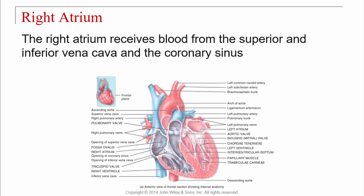We have a tricuspid valve on the right side with three cusps, and on the left side a bicuspid valve, also called the mitral valve, which also has chordae tendinae. These two are your AV (atrioventricular) valves. There are also different valves: the pulmonary valve and the aortic valve — these look like little cups. When blood fills them up, it fills the cups, and that's what closes the valve and prevents backflow.